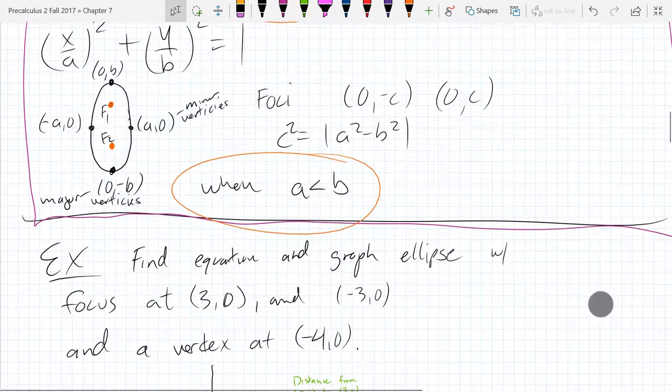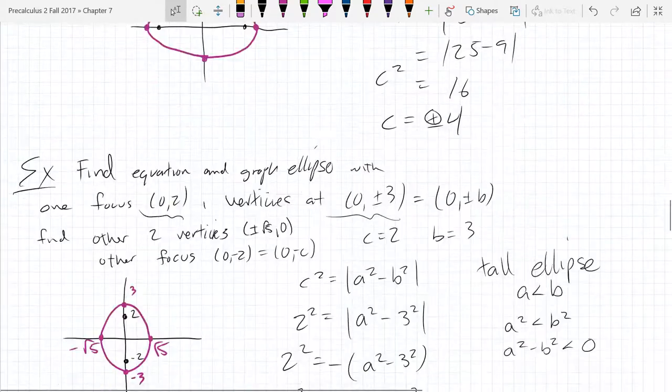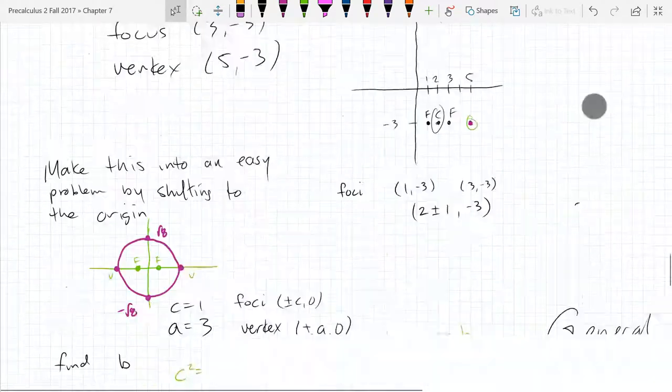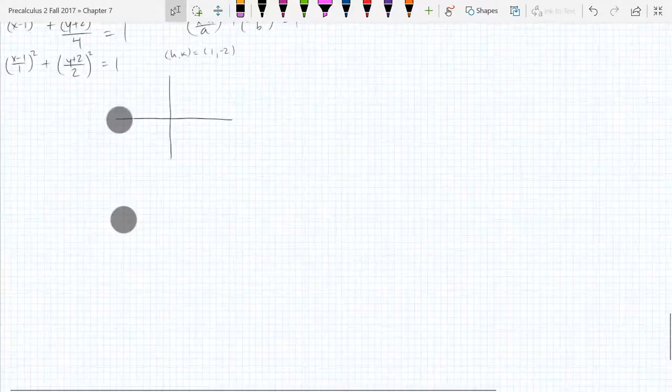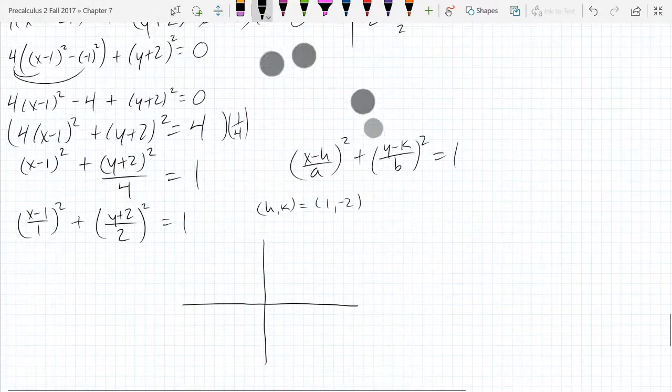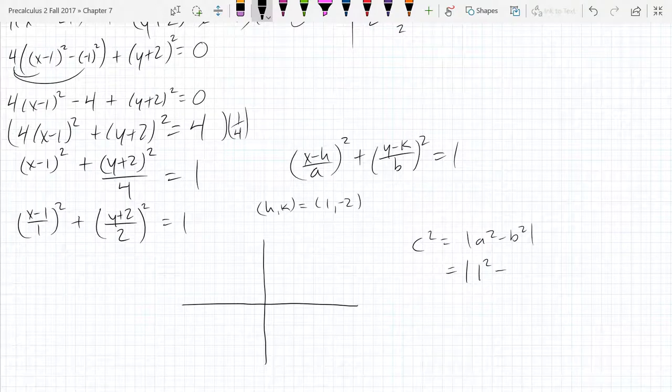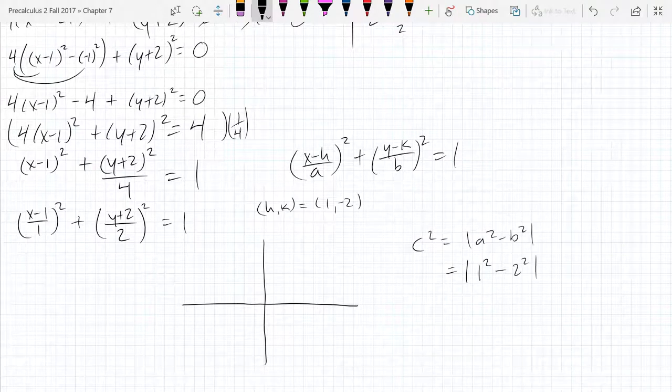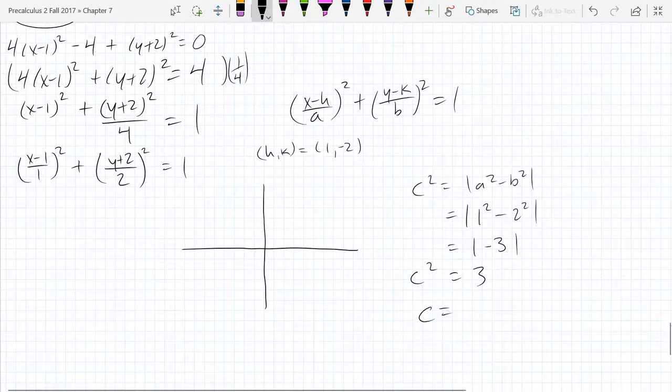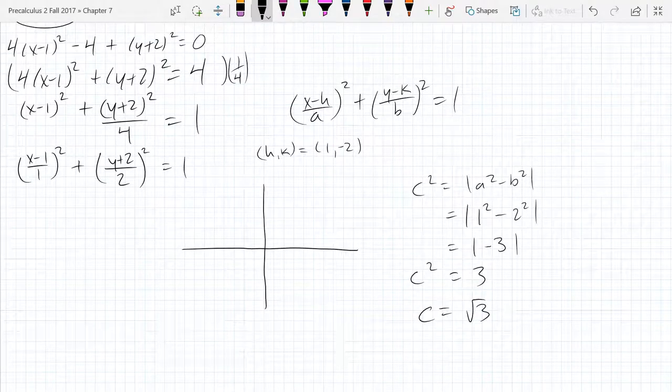Let's go ahead and compute what c is. So c is going to be a squared minus b squared absolute value. Your a is 1 minus 2 squared negative 3. Absolute value is regular 3. And that's not c. That's c squared. So c is square root 3. You're always going with the positives for a, b, and c on our ellipses.